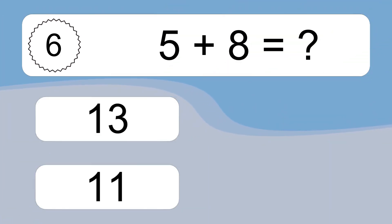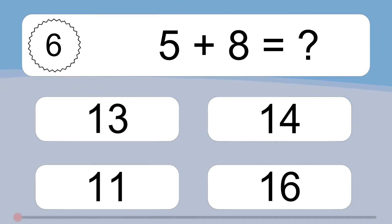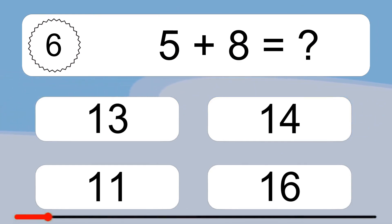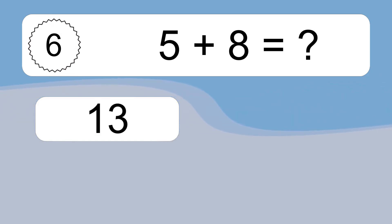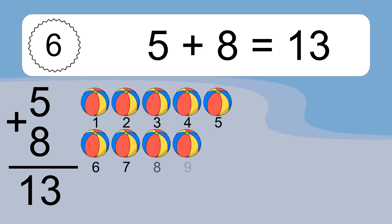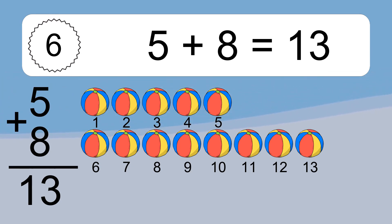5 plus 9 equals 11. Let's count it: 1, 2, 3, 4, 5, 6, 7, 8, 9, 10, 11.